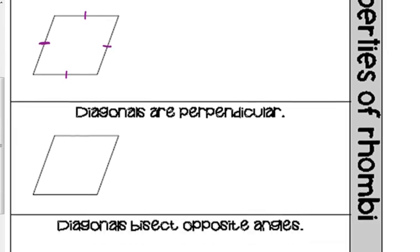With the rhombus, these diagonals not only bisect one another, they bisect each other at a right angle — they are perpendicular. They meet at a right angle in the middle. So we actually have four right triangles within a rhombus. The fact that the sides are congruent could help us solve problems.